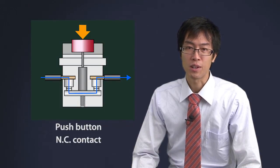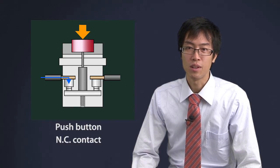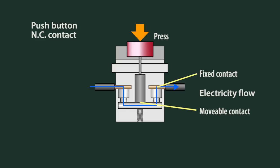Normally Closed Contact, conversely, is a contact that is closed in its default position. When actuated, the contact will open and no electricity will flow.